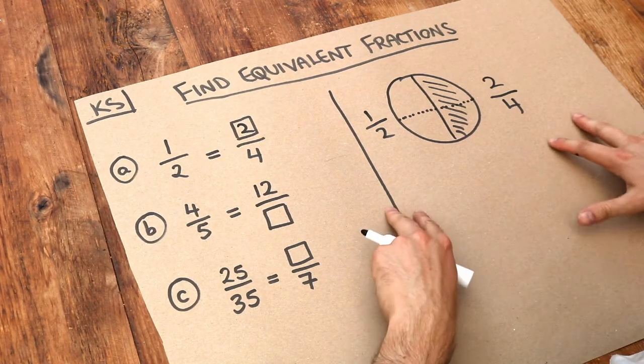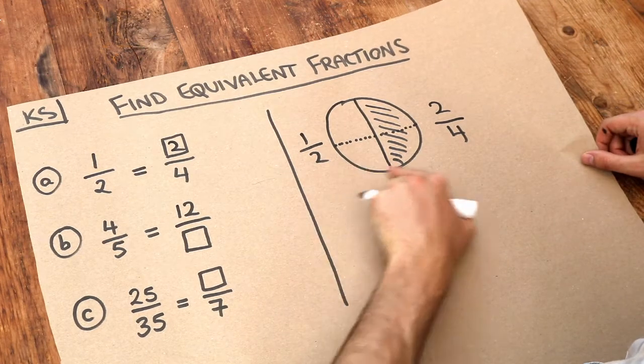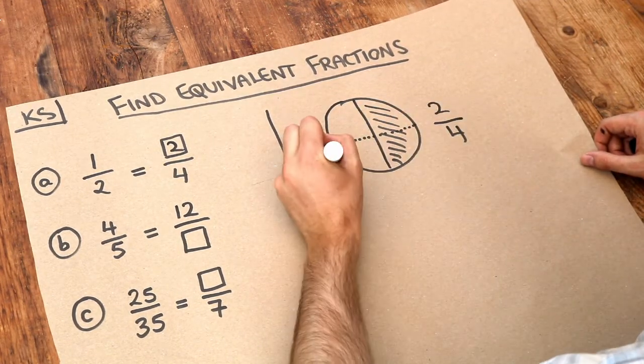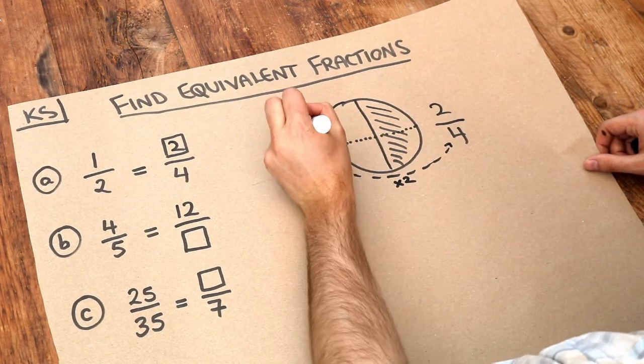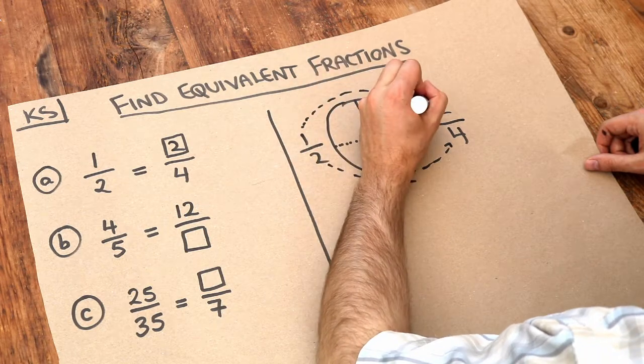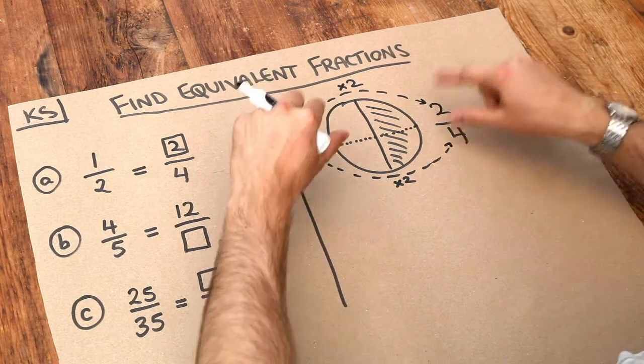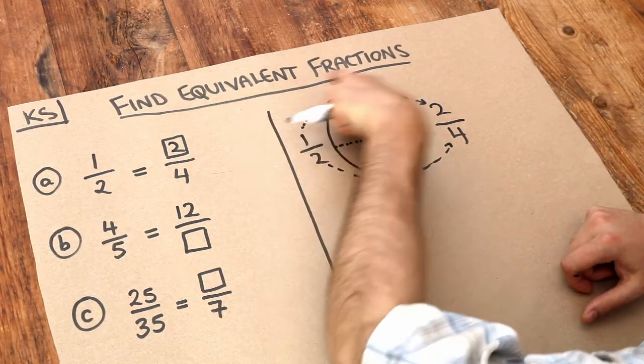The way to do this without having to draw a diagram each time is to think: whatever I do to the bottom number, the denominator, I have to do the same to the top number, the numerator. In this particular case I multiply the denominator by two, and therefore you have to times the numerator by two also. As long as those two numbers are the same, then you know those fractions are going to be the same. We say they're equivalent fractions.